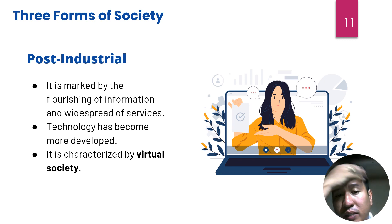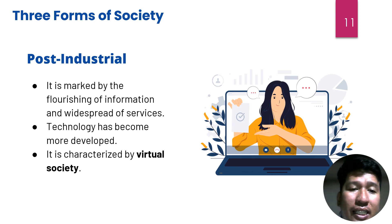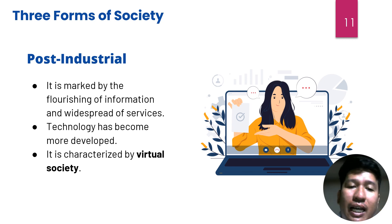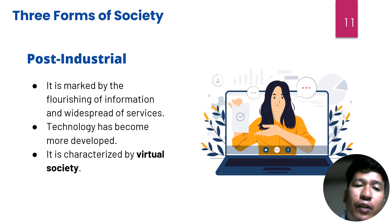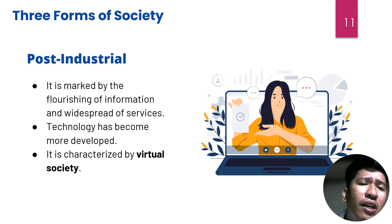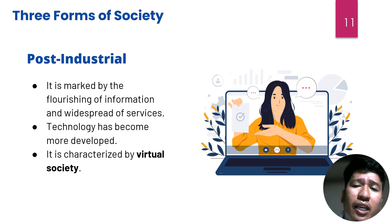The third form of society is post-industrial society, marked by the flourishing of information and widespread services. Technology has become more developed and it is characterized by a virtual society. Some scholars, however, do not recognize post-industrial society as separate from capitalist society.